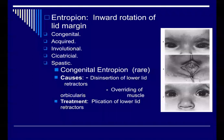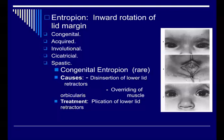Usually in kids, the entropion resolves as the child's age and bone growth develop. If it is severe and causing symptoms, then we consider surgery by removing a stripe of the muscle and skin, then suturing the inferior retractors to the tarsal plate and then to the skin. Congenital entropion can also be due to disinsertion of the lower lid retractors or overriding of the orbicularis muscle.